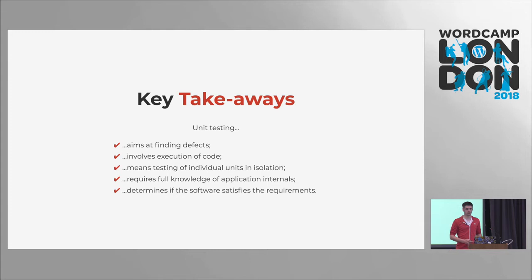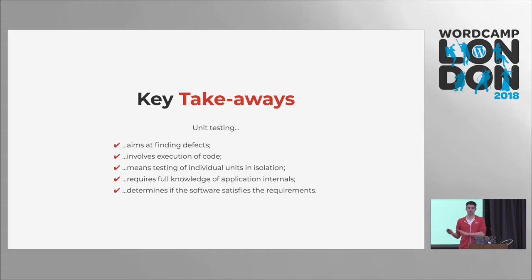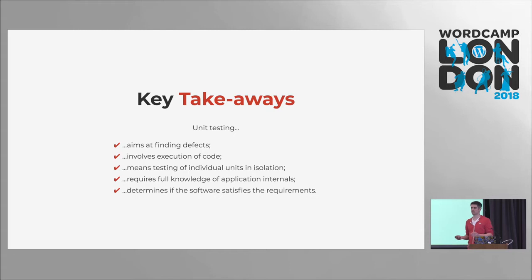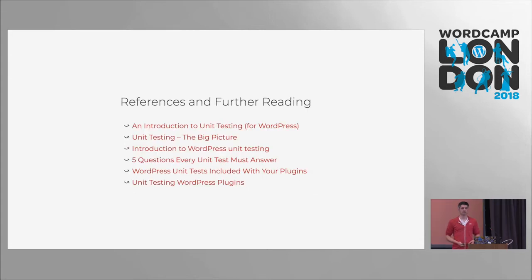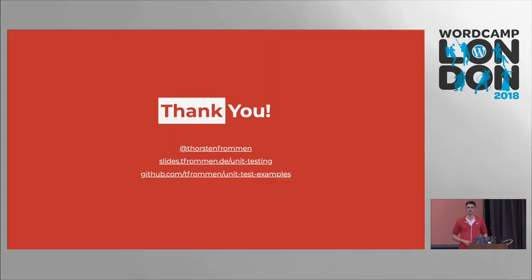The takeaways from this talk: unit testing aims at finding defects at the code level. It is about executing the code — dynamic testing. We're testing units individually. We have to have full knowledge of the code. And also the actual implicit goal is we want to make sure that the software works. If you want to read about that, the slides are online with articles about unit testing. Thank you — maybe there's time for some questions if you're still awake.